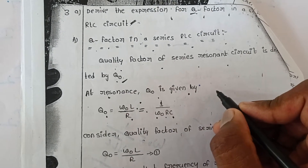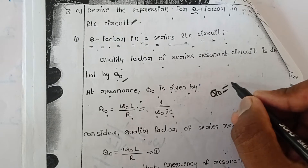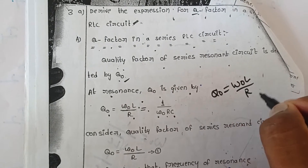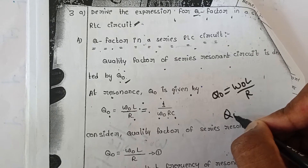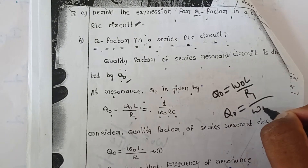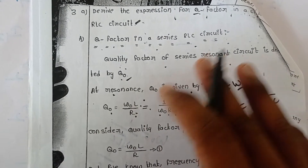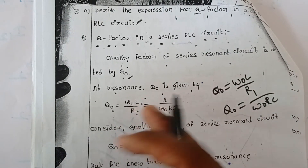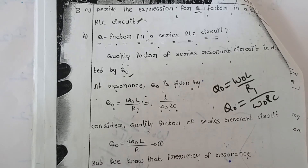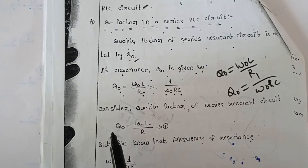If I want to find the quality factor of inductance, then omega_0 * L / R is the formula. If I want to find the quality factor of capacitor, then 1 / (omega_0 * R * C) is the formula. Both are correct — you can choose any one of these for finding the quality factor of series RLC circuits.